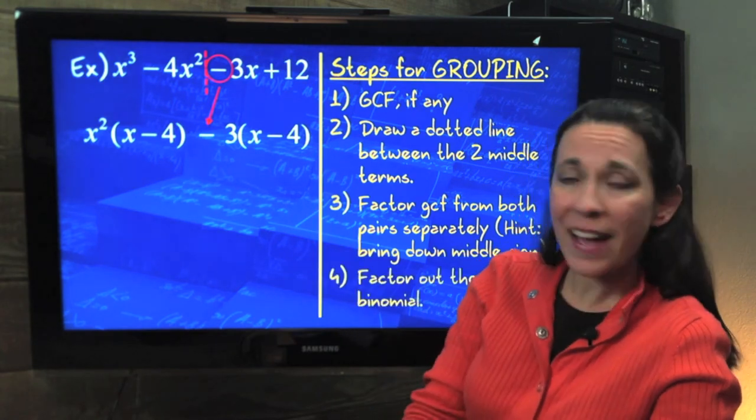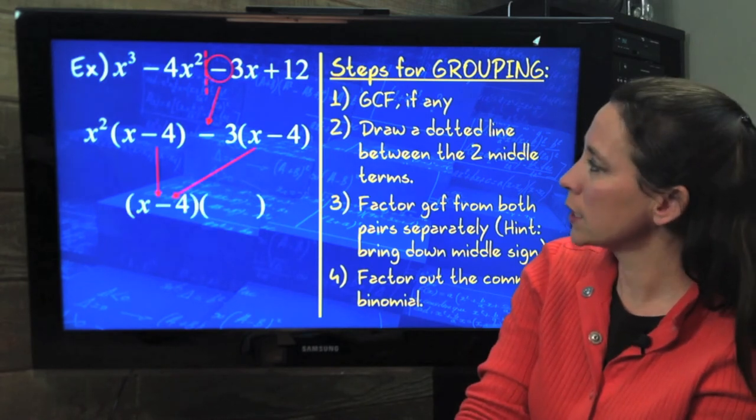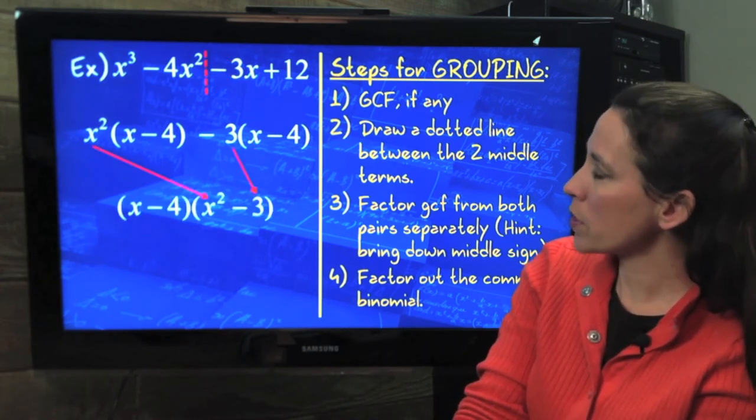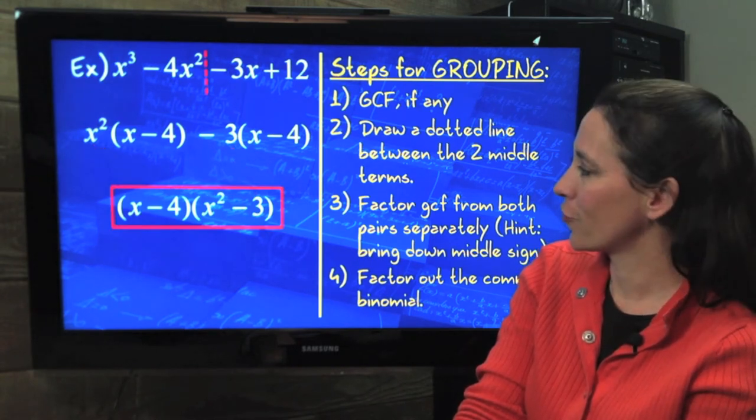Now we're going to factor out that binomial that's in common. So there's the x - 4, leaving us with the x² and the -3 for our second binomial factor.